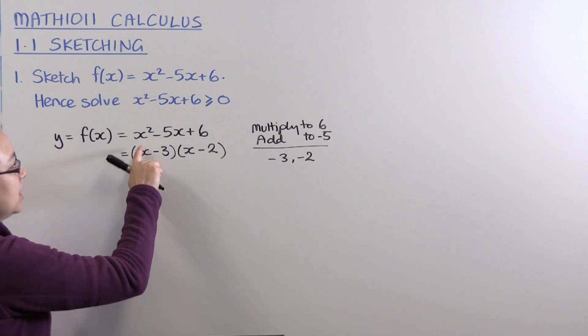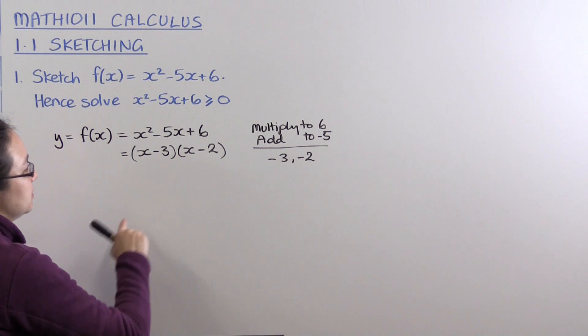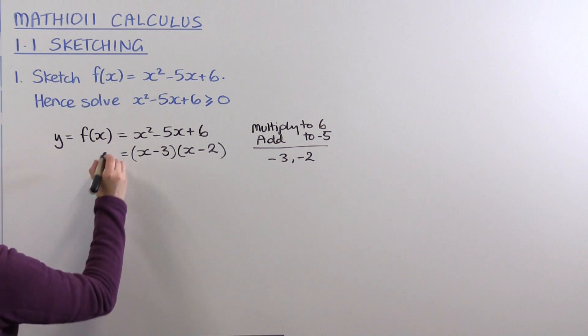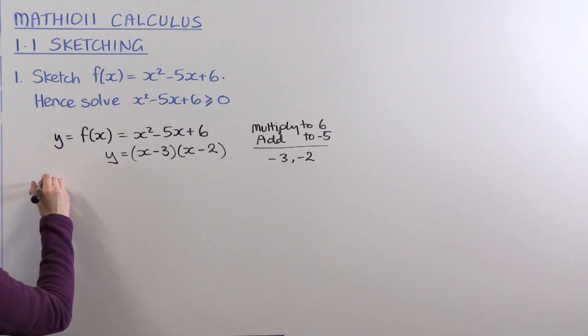We can check by expanding: that's x² - 3x - 2x = -5x, and -3 times -2 = +6. So we're essentially sketching y equals this factorized version. The factorized version allows us to find the x-intercepts very easily.